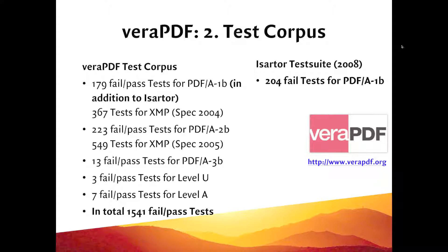The VeraPDF project is only for validation — it doesn't do any fixing, correction, conversion, or anything like that. It is purely focused on validation. It could also be used for additional validation after PDF/A conversion. If you have a native application like Word that claims to write a PDF/A document, you could use the open source validator to verify that. If you're using a commercial tool such as PDF/A Pilot for batch conversion, the VeraPDF validator provides an independent back-end validation.